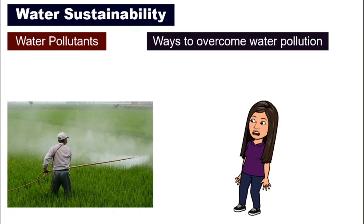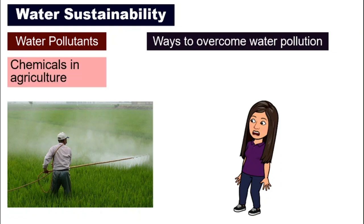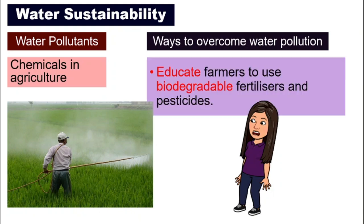The next water pollutant we are going to look at will be chemicals used in agriculture, meaning those that come from farmers. We can educate farmers to use biodegradable fertilizers and pesticides instead of chemical ones. Biodegradable fertilizers and pesticides are a lot friendlier to our environment.